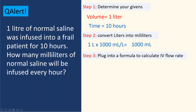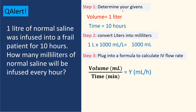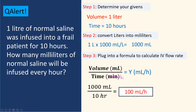Step three: plug into the IV flow rate formula — volume in mLs divided by time in hours. You have 1000 mLs divided by 10 hours, which gives you 100 mLs per hour. These are some examples to help you practice in a faster and accurate way.